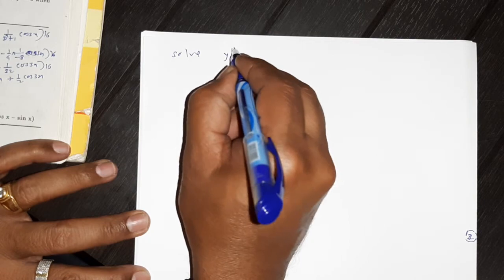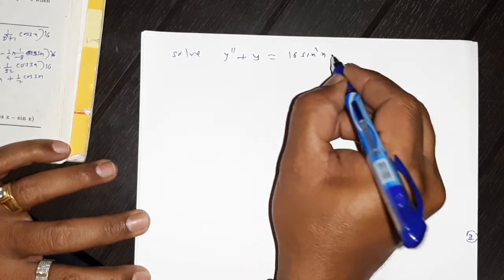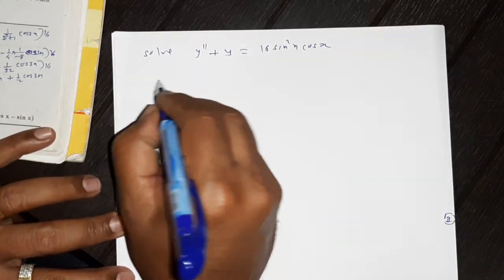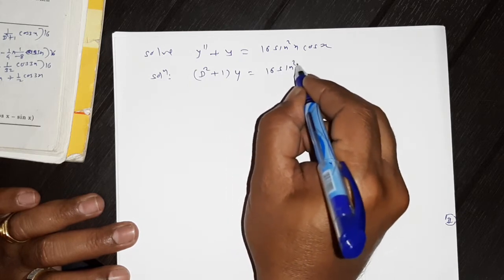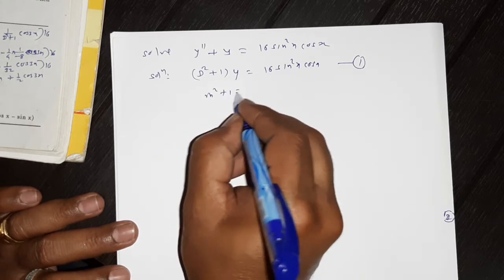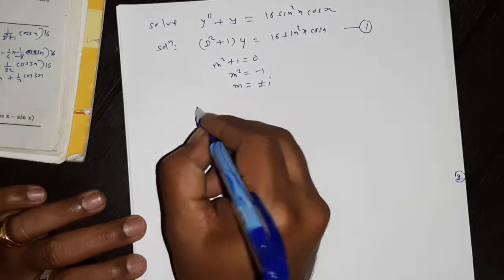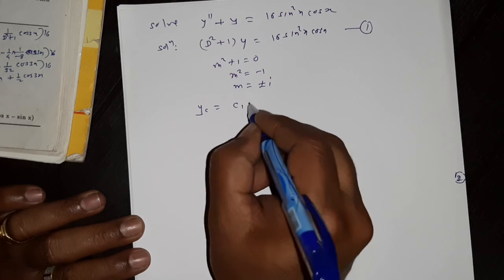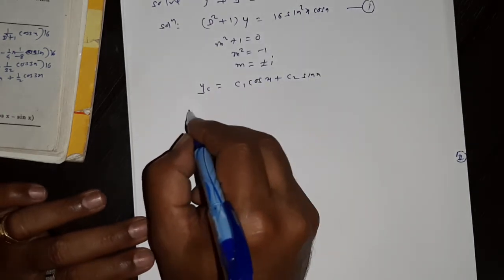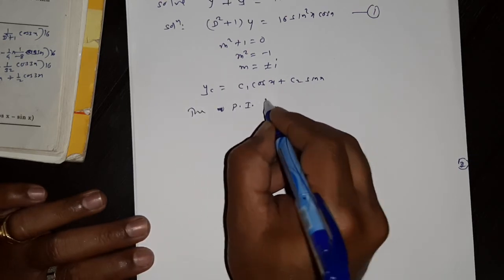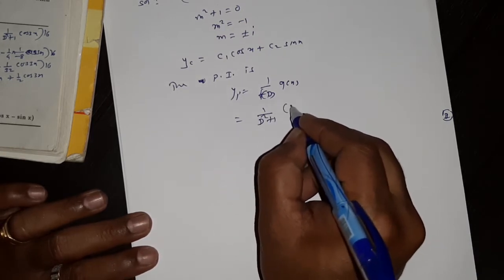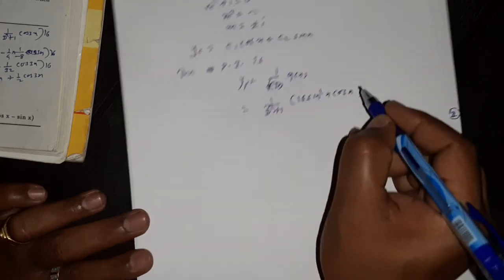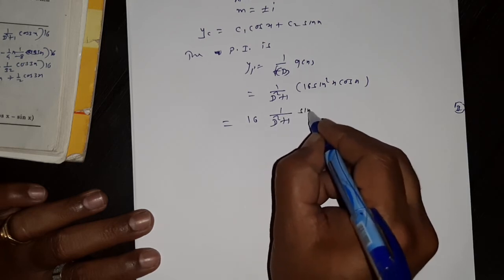Next problem of the same type: Solve y'' + y = 16sin²(x)·cos(x). The differential equation is (D² + 1)y = 16sin²(x)·cos(x). The auxiliary equation is m² + 1 = 0, so m = ±i. The complementary function is y_c = c₁cos(x) + c₂sin(x). For the particular integral, y_p = 1/(D² + 1) · 16sin²(x)·cos(x).